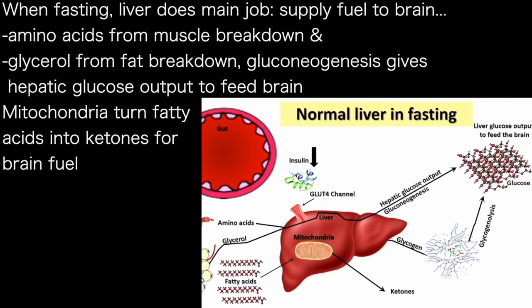Now, let's turn to how the liver interfaces with food. In the setting of fasting, the liver is charged with the main responsibility of supplying the brain with fuel. Our brain refuses to fast — it needs a certain amount of food all the time. And so amino acids from muscle breakdown and glycerol from fat breakdown are converted in the liver through a process called gluconeogenesis to provide what is called hepatic glucose output for the brain.